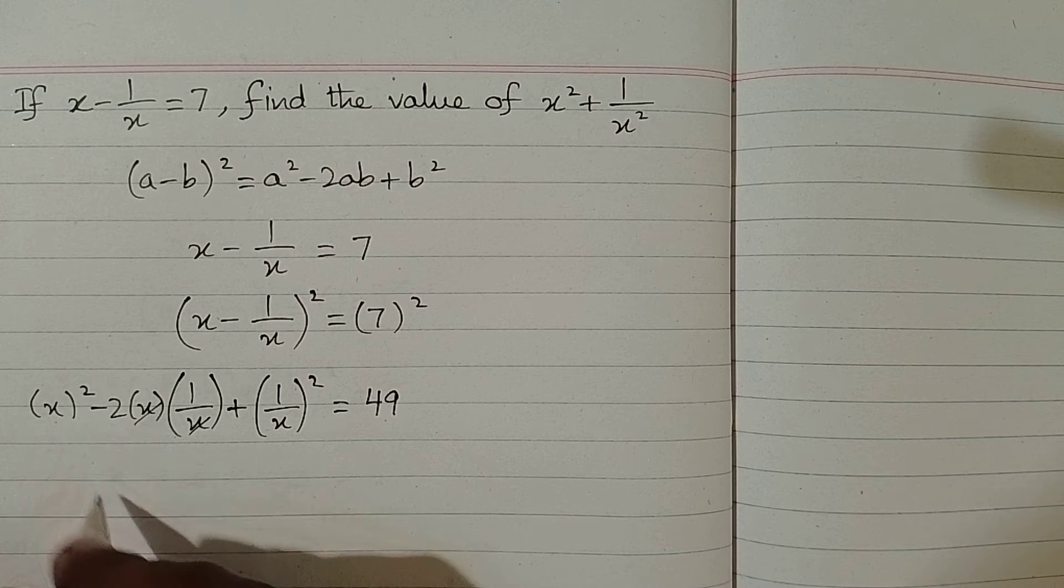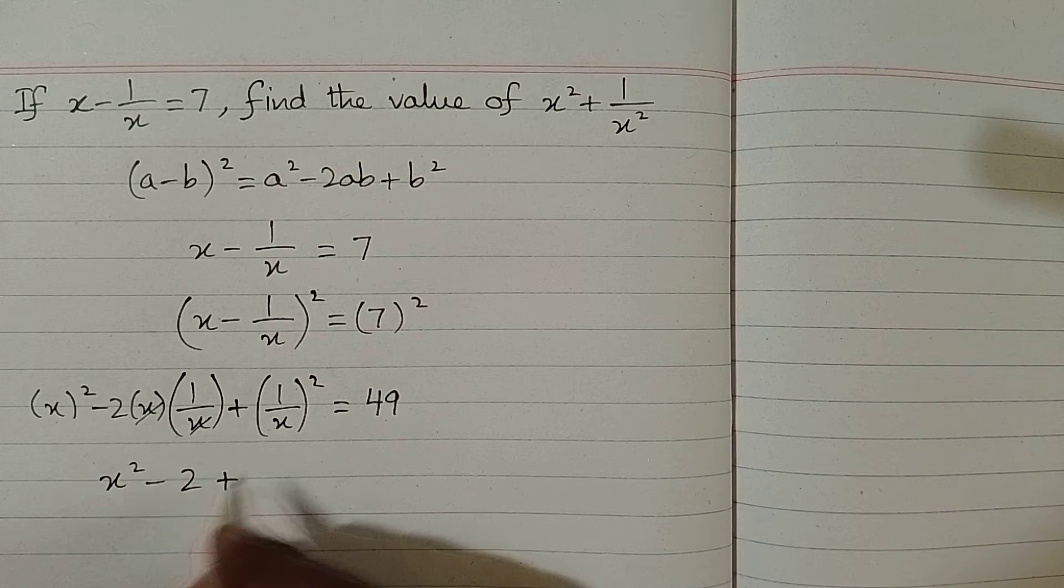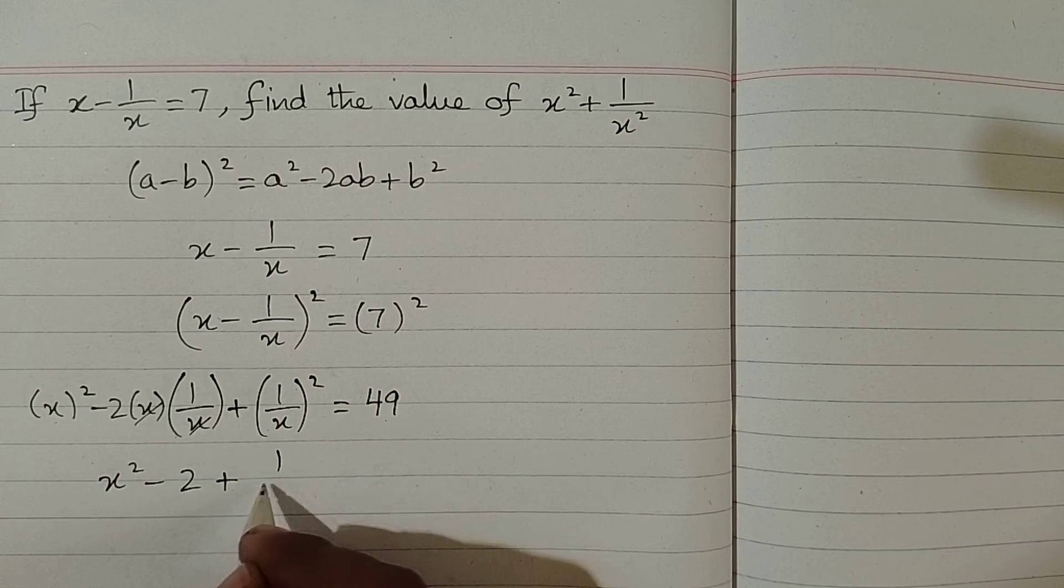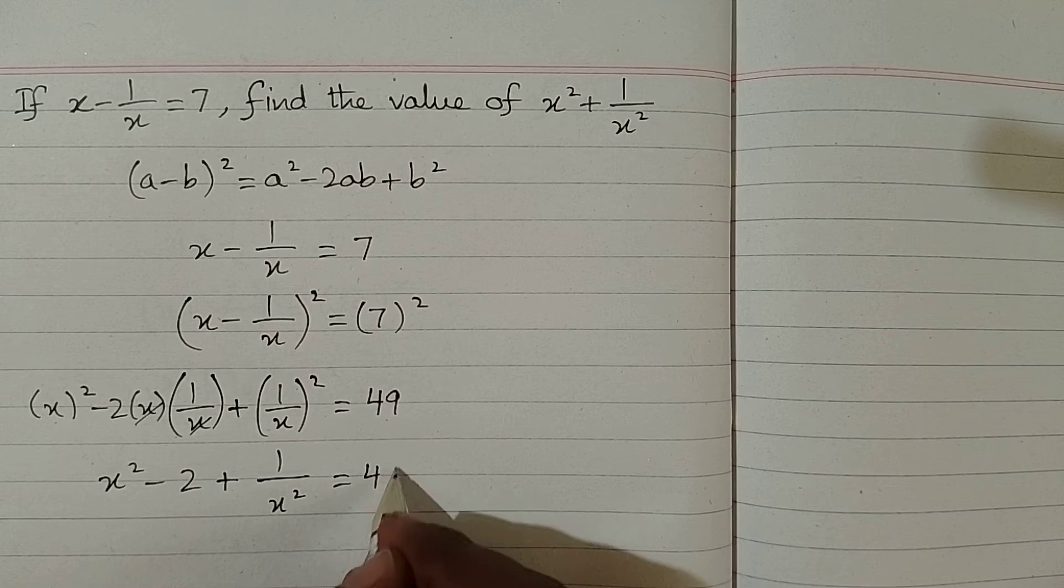So square of x is x square and minus 2 times 1 is minus 2 plus square of 1 is 1 and square of x is x square is equal to 49.